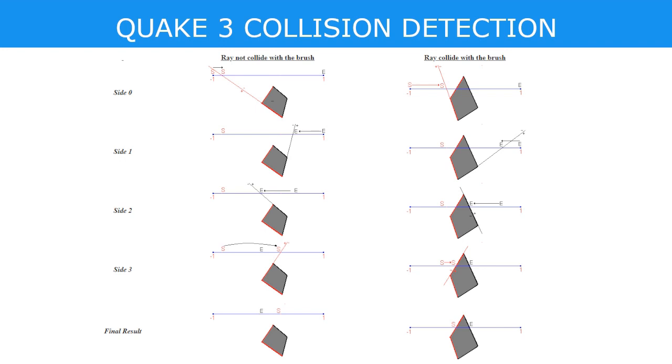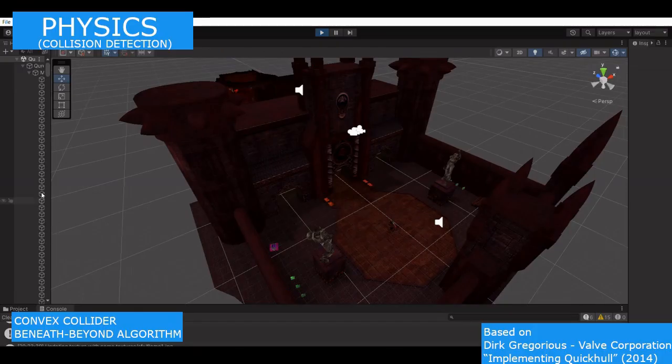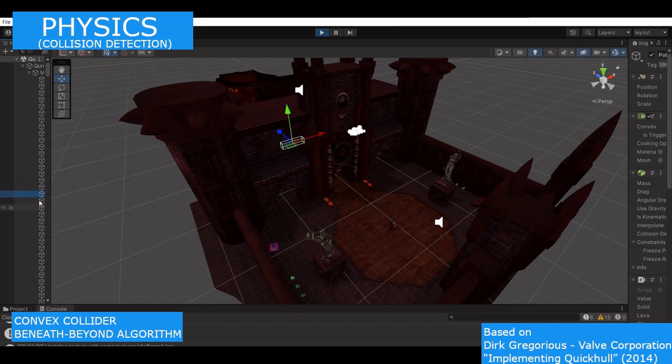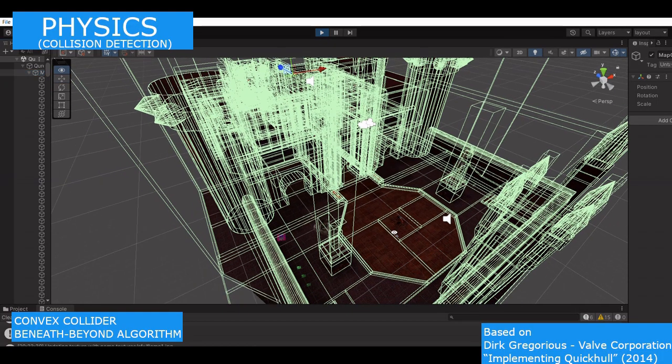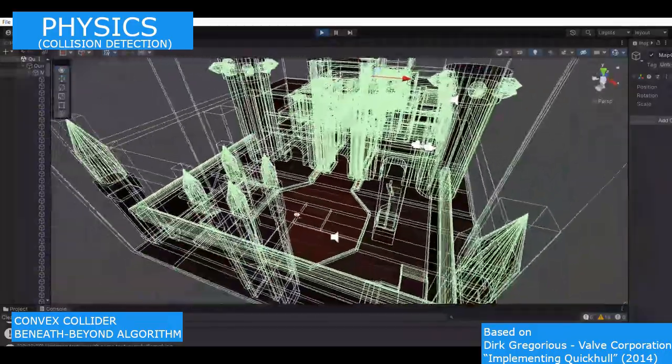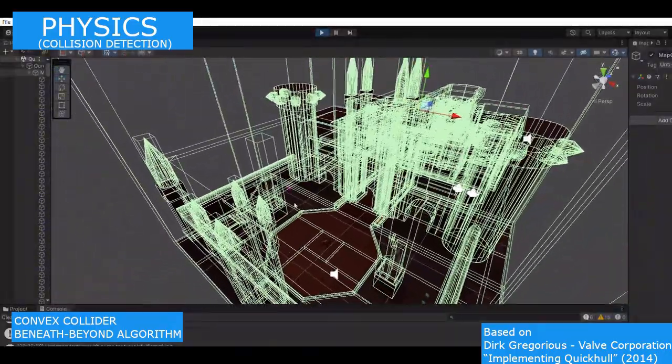However, we are going to use the brushes, but in a completely different way. As we are still using the brushes, the brushes are defined by planes. We know that the brushes are convex, so if we get the vertices of the intersection of all the planes, as you can see over there, then we use a convex hull to get a convex surface. We use the quickhull algorithm, based on Dirk Gregorius from Valve Corporation and his PDF implementing Quickhull.